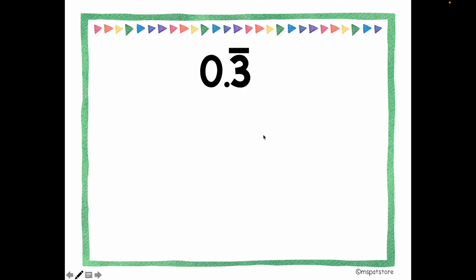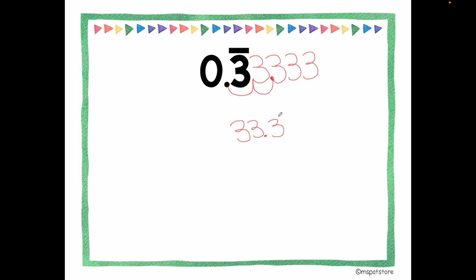How about this repeating decimal? Please pause the video and try to rewrite it as a percent. As you see, the bar notation means the number 3 repeats non-stop. So I shift my decimal point two spaces to the right: one and two. That gives 33.3̄ — with bar notation on top to show the three repeating — and I add the percent symbol. So it's 33.3̄ percent.